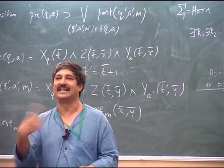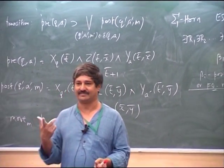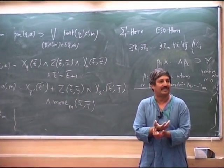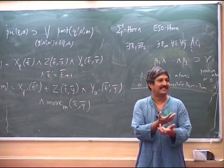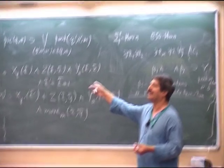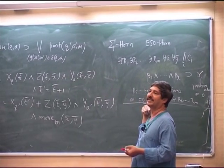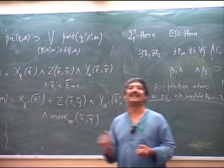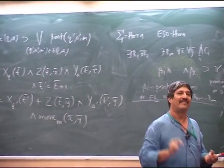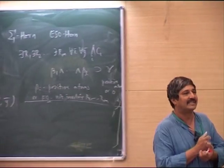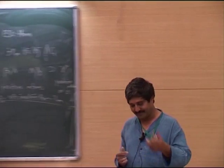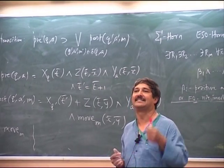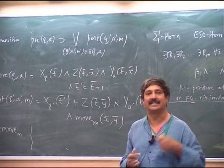The linear order of course is something that is given to you. On that you develop this whole business. You can convince yourself that there is an ESO horn sentence that gives you exactly the class that the Turing machine is accepting.